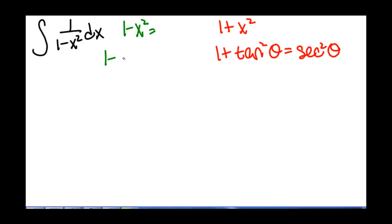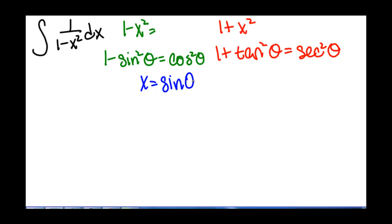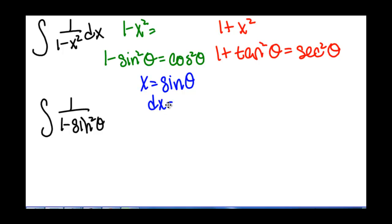Hopefully you remember that 1 minus sine squared of theta equals cosine squared of theta. So we're going to use the substitution that x equals sine of theta. Using that substitution, we have the integral of 1 over 1 minus sine squared of theta. Now we need to substitute for our dx, and taking the derivative, we get dx equals cosine of theta d theta.